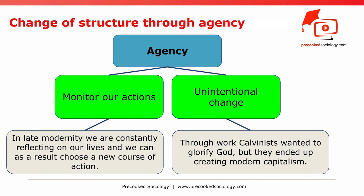Change of structure through agency. We can also change social structure through our agency in two ways. First, we can reflexively monitor our actions — in late modernity we constantly reflect on our lives and can choose a new course of action. This may explain changing patterns of marriage and family life, the decline of organized religion, and many other things. Second, our actions can change the world, but not always in an intentional way. For example, the Calvinists wanted to glorify God through work, but ended up creating modern capitalism.